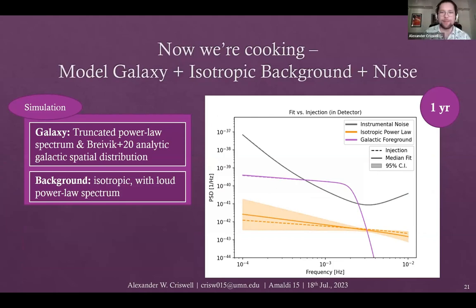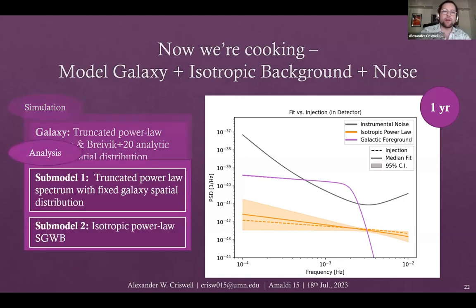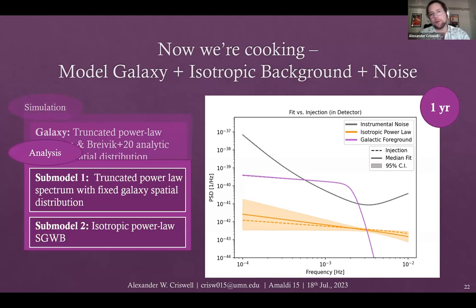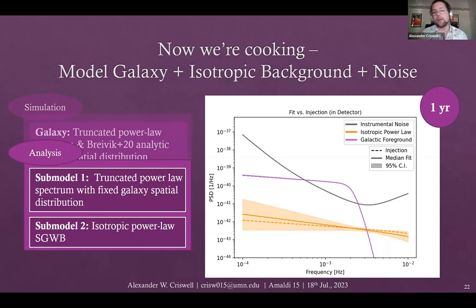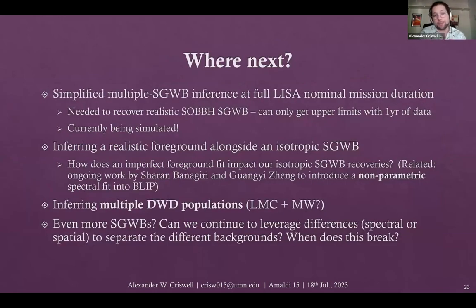Now for what I actually promised in the title: simultaneous inference of multiple stochastic signals in LISA. This is a simulation for one year of data looking at the simplified analytic galaxy model plus a particularly loud isotropic power law stochastic background. We try to recover both assuming the known galaxy distribution and the same spectral models. We are able to simultaneously infer all of these things.